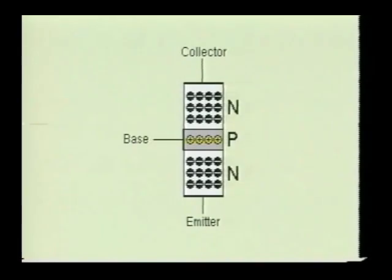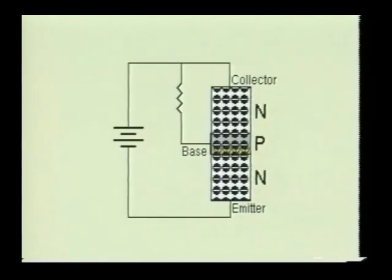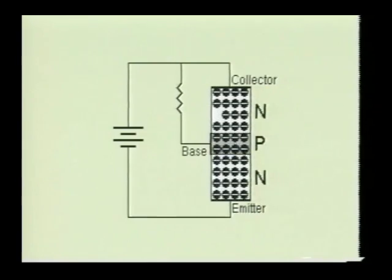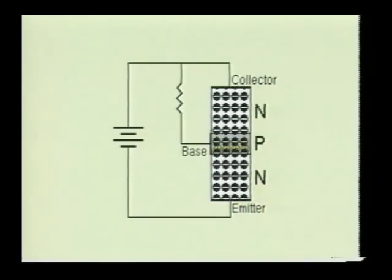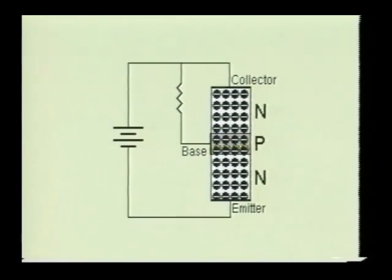The base section of the transistor is very narrow and is very lightly doped. The emitter and collector sections, on the other hand, are doped very heavily. This causes the depletion regions between the emitter base and the collector base to penetrate very deep into the base section of the transistor. Since the base section is lightly doped, there will be fewer majority charge carriers available to recombine with the charge carriers coming from the emitter section.